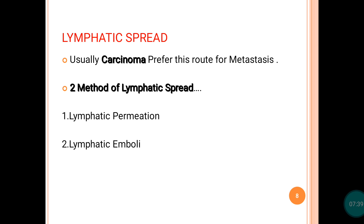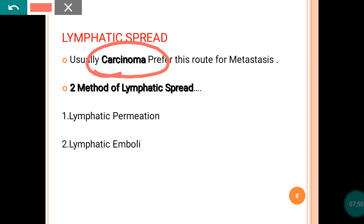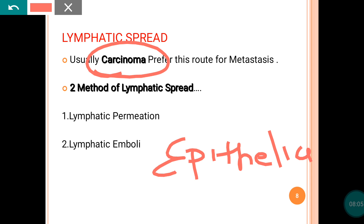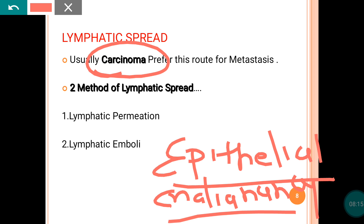First we will discuss lymphatic spread — the tumor spreads via the lymphatic route. You have to remember that usually carcinoma prefers this route. Carcinoma is the malignancy of the epithelial cell. So all epithelial malignancies will usually prefer this route for metastasis — that is why the lymphatic spread. It is the usual preferred route for epithelial malignancy.